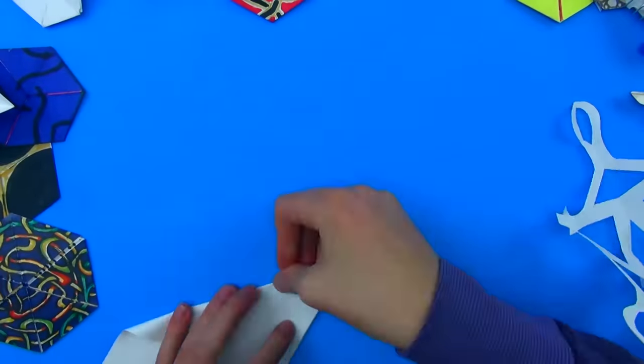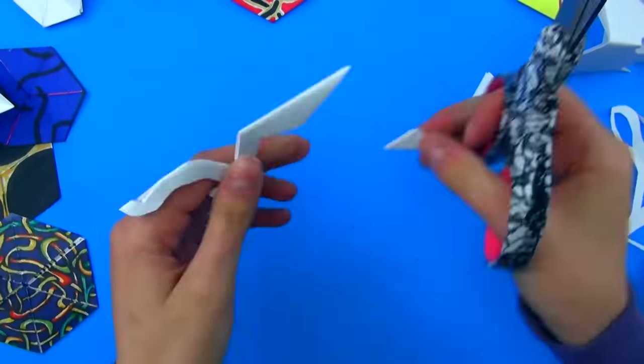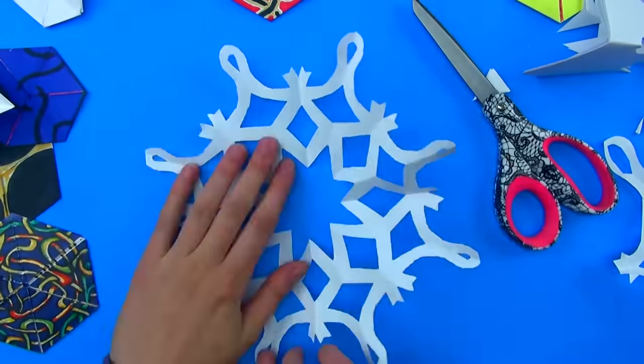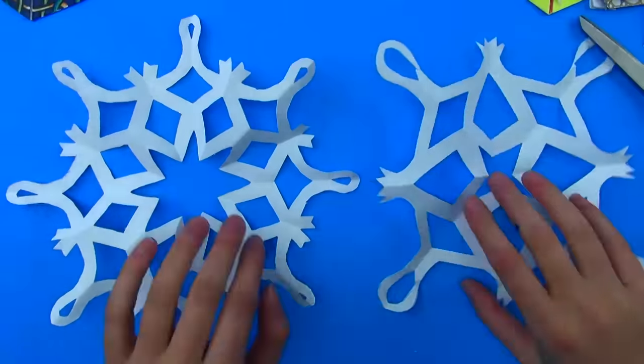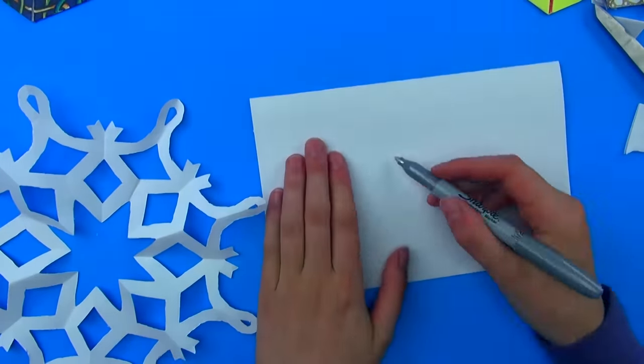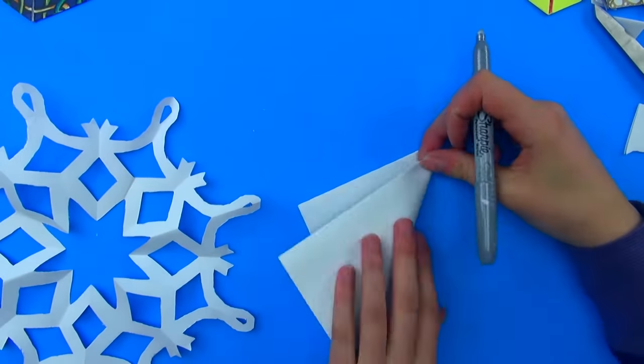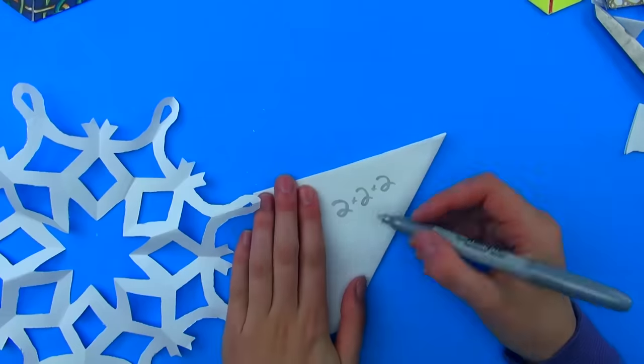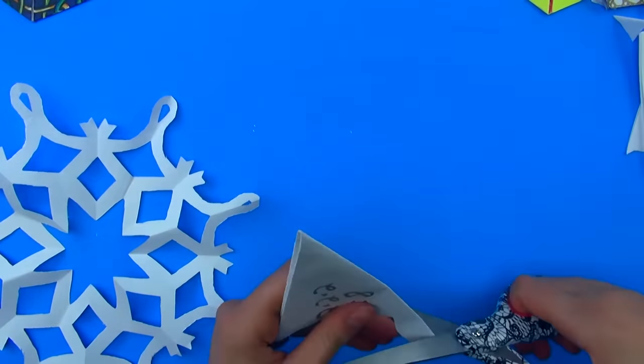Or you could fold it in half four times to get an even more snowflakey looking thing, but real snowflakes have six-fold symmetry. They're hexagon-y like, whereas this thing has eight-fold symmetry, which you figure is just what happens when you fold something in two and then in two and then in two, because each time you're doubling the amount of folds and two times two times two is eight.